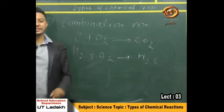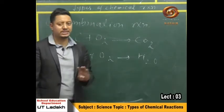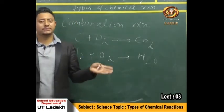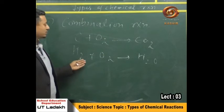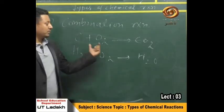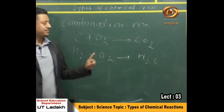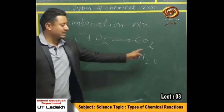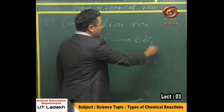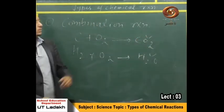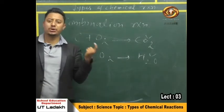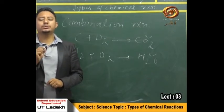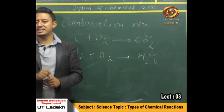I have already written two examples here. One is carbon plus oxygen giving rise to carbon dioxide. The second one, which we use in our labs on a daily basis, is H₂ plus O₂ giving rise to water. In these reactions, two reactants are combining to form a single product — only one product on the right-hand side and two or more reactants on the left-hand side.